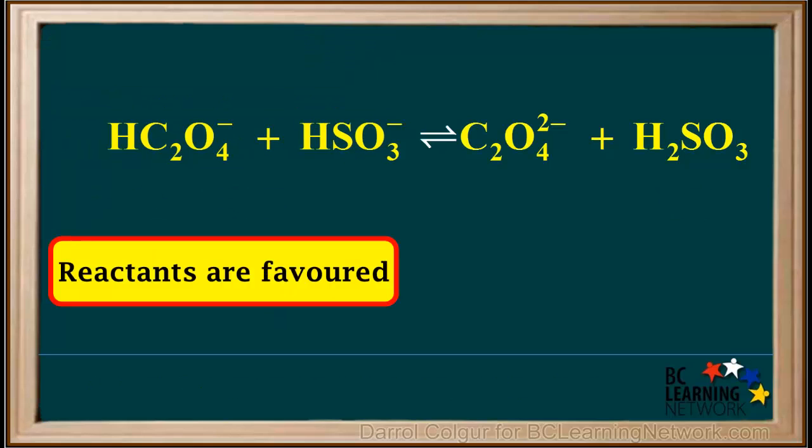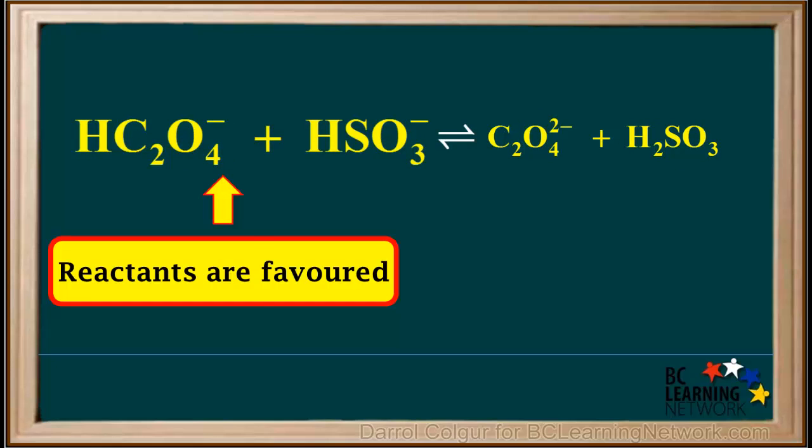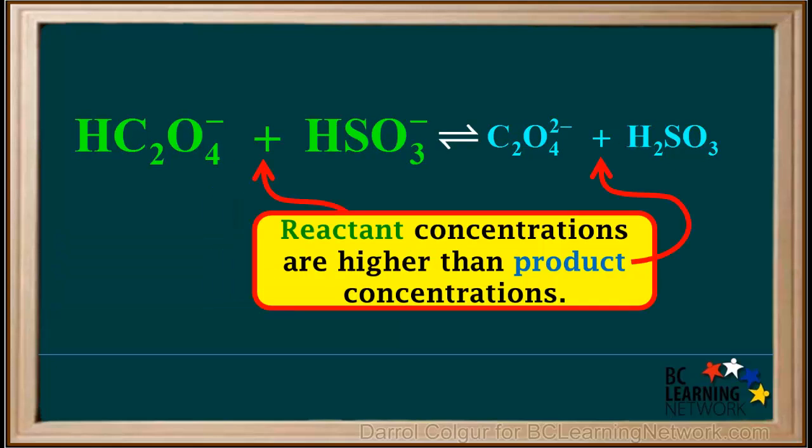Now we'll look at the relative amounts of reactants and products present at equilibrium. Because reactants are favored, there are more reactants than products at equilibrium, or we can say that reactant concentrations are higher than product concentrations at equilibrium.